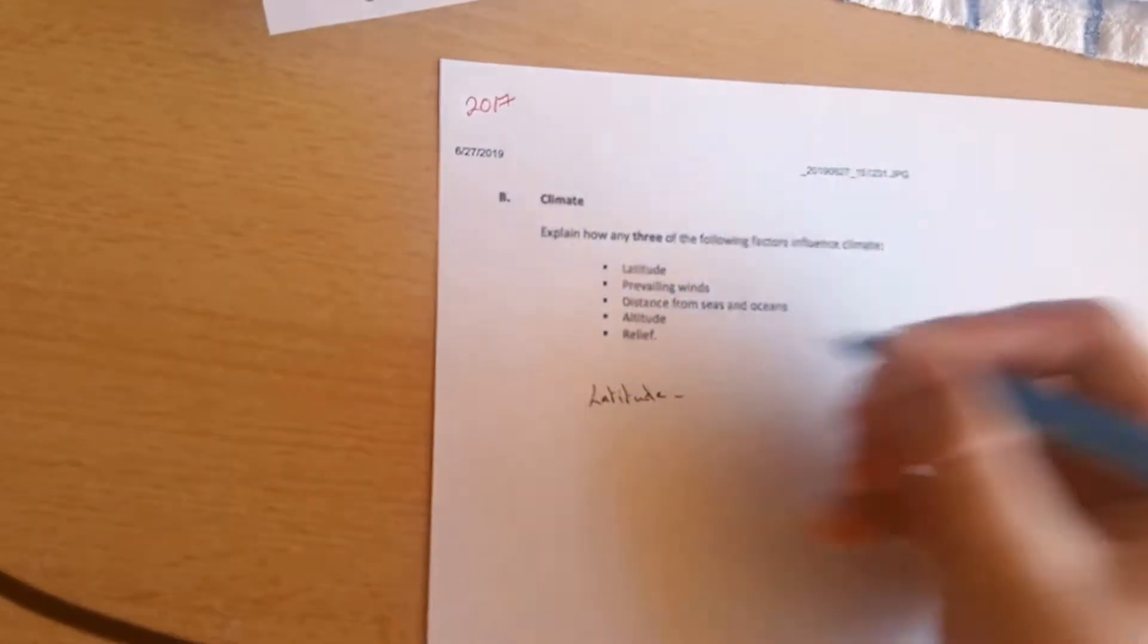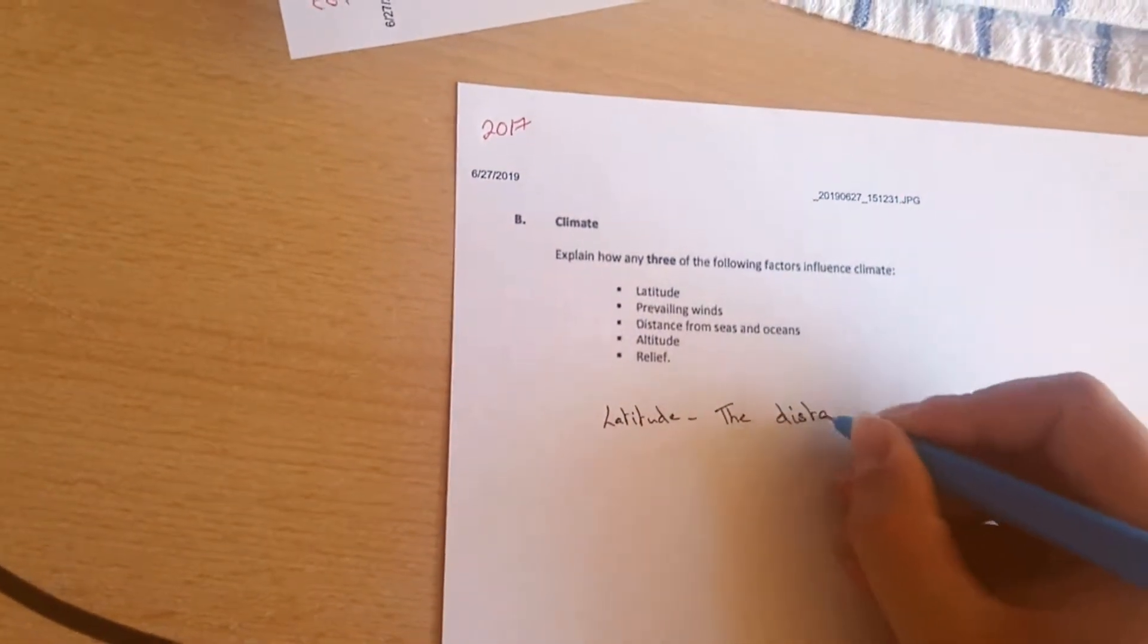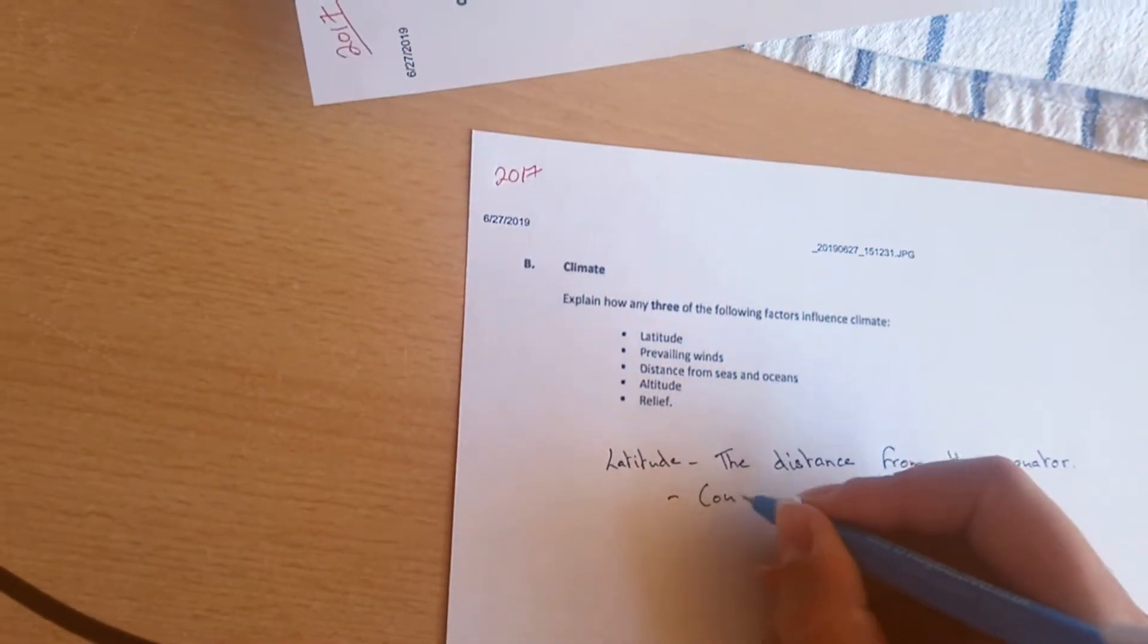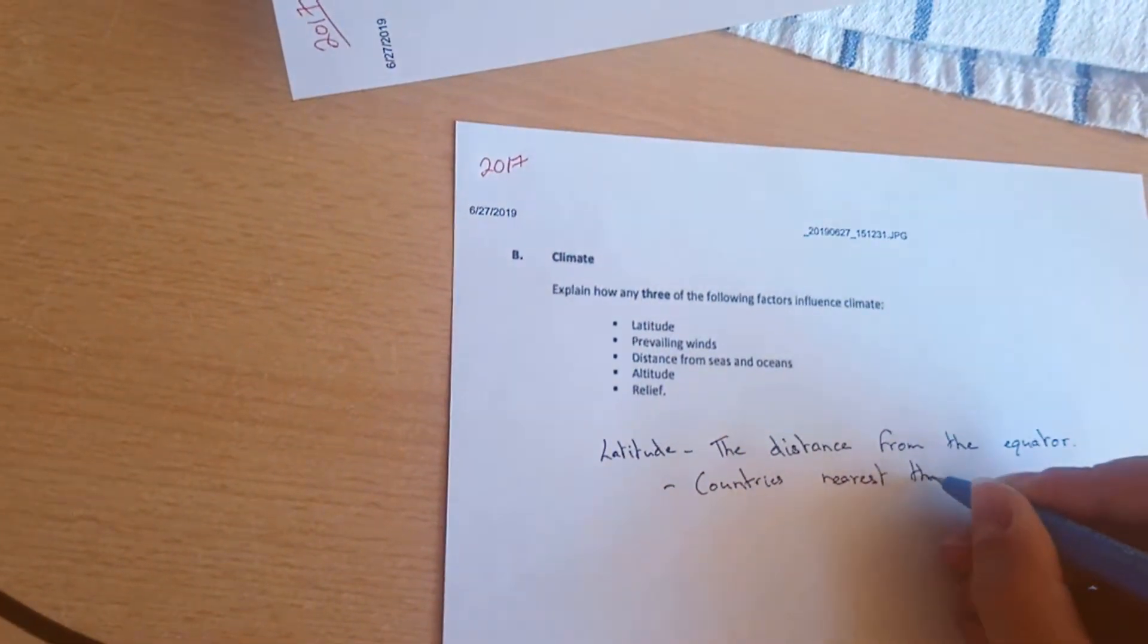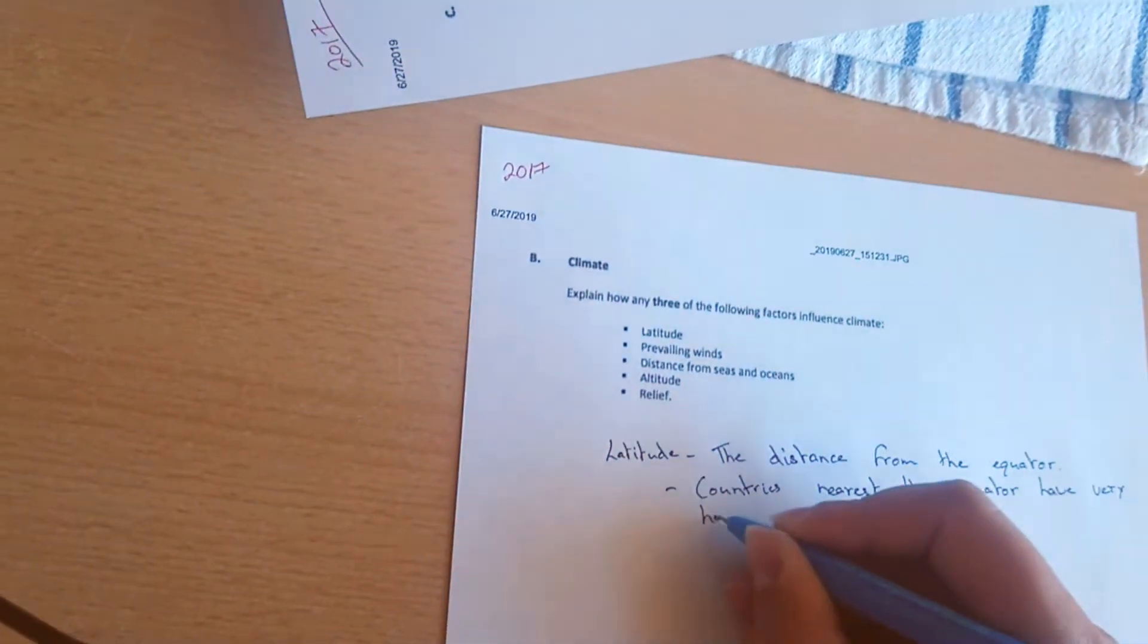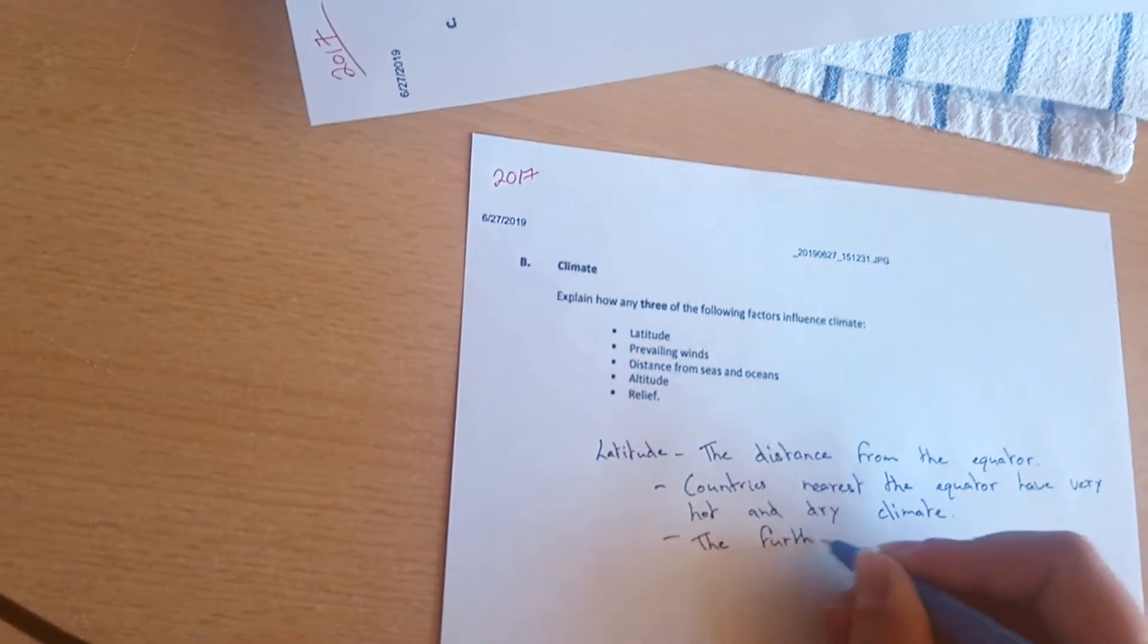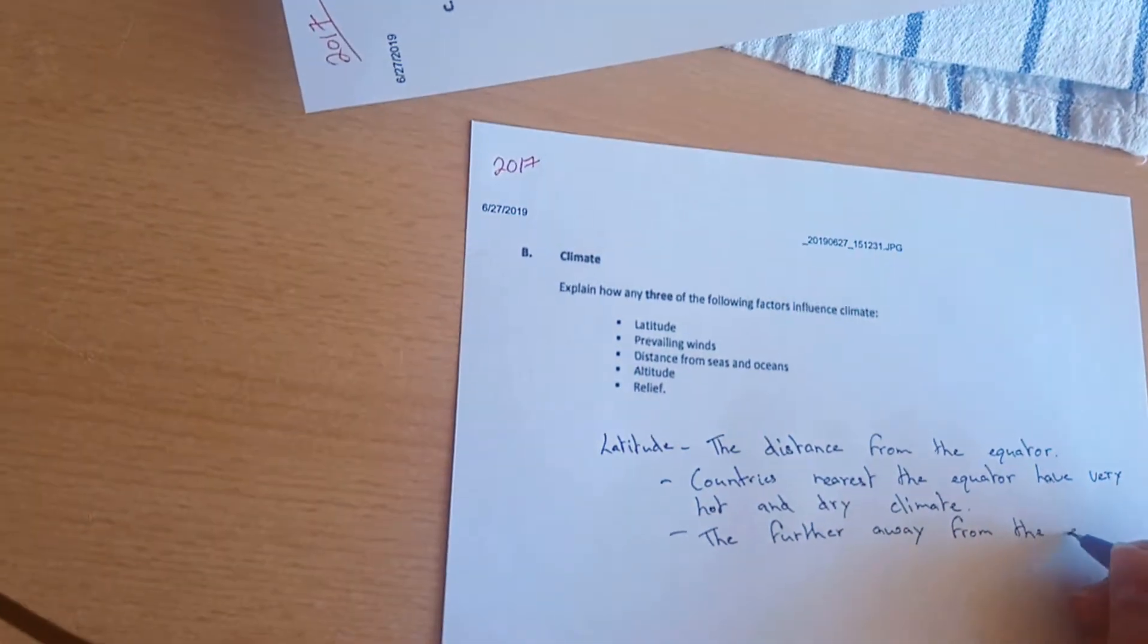We want to first identify what this word actually means. It's the distance from the equator. Countries nearest the equator have very hot and dry climates, and the further away you get from the equator, the cooler the climate becomes.